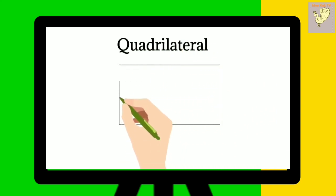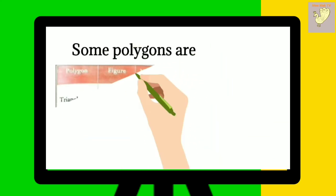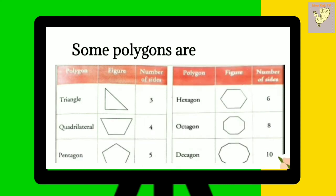A quadrilateral is also a polygon with four sides. Some polygons are triangle with three sides, quadrilateral with four sides, pentagon with five sides, hexagon with six sides, octagon with eight sides and decagon with ten sides.